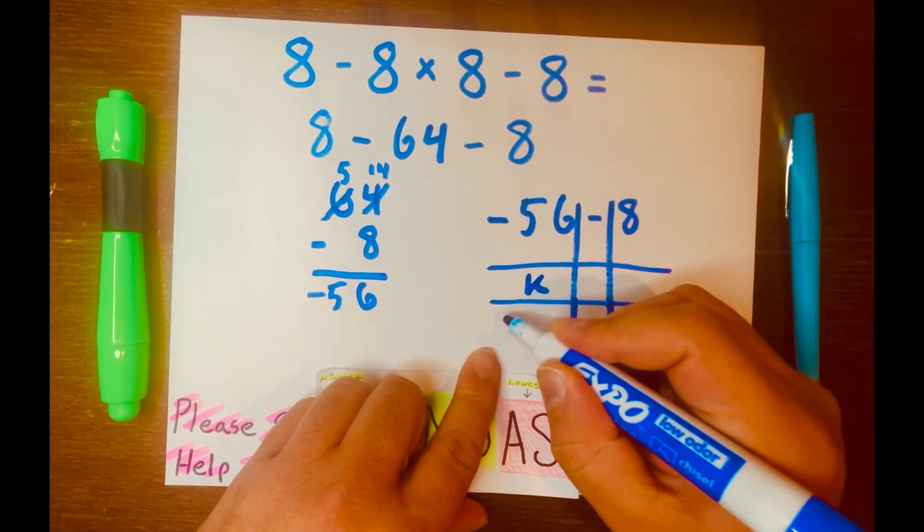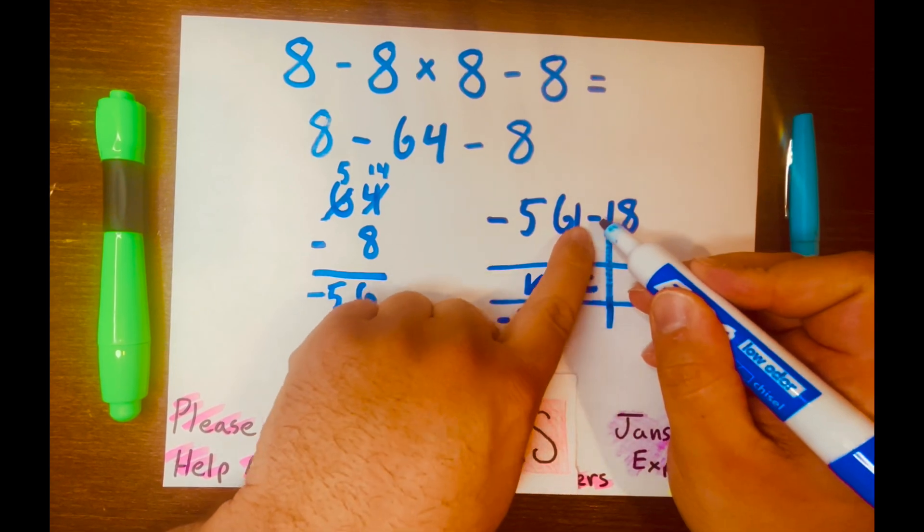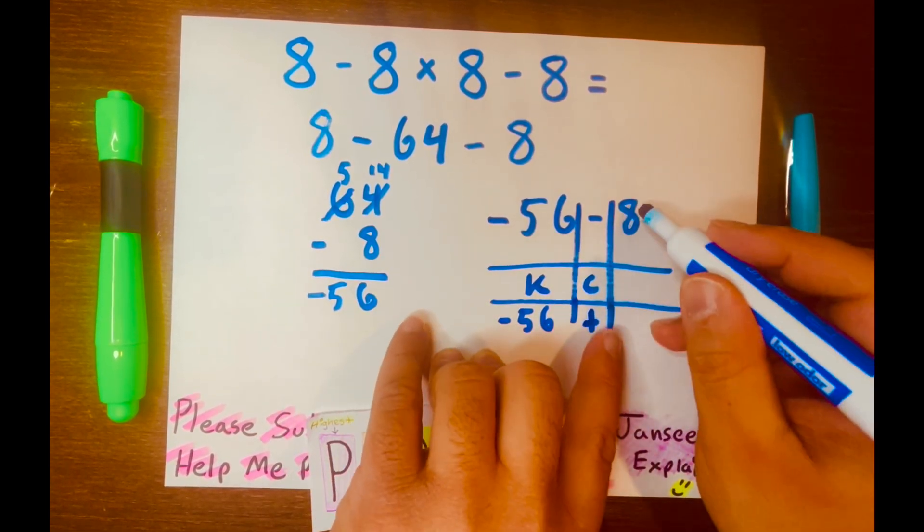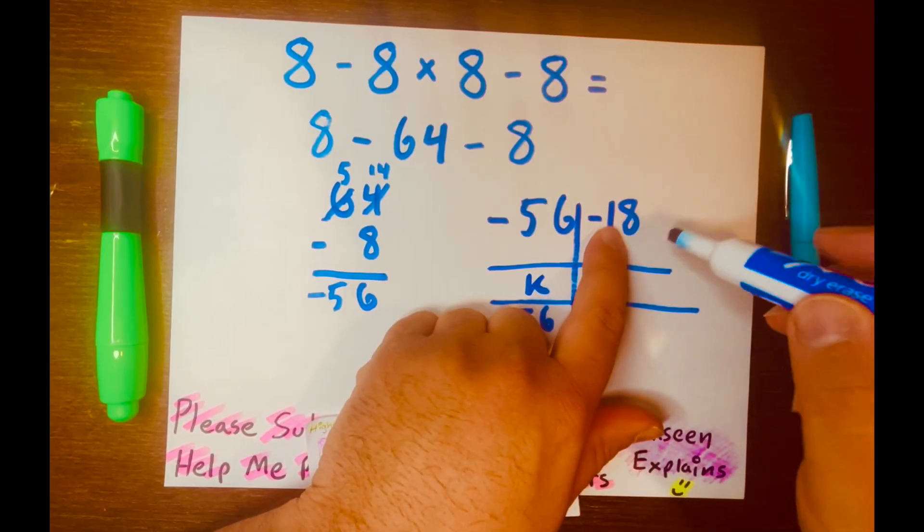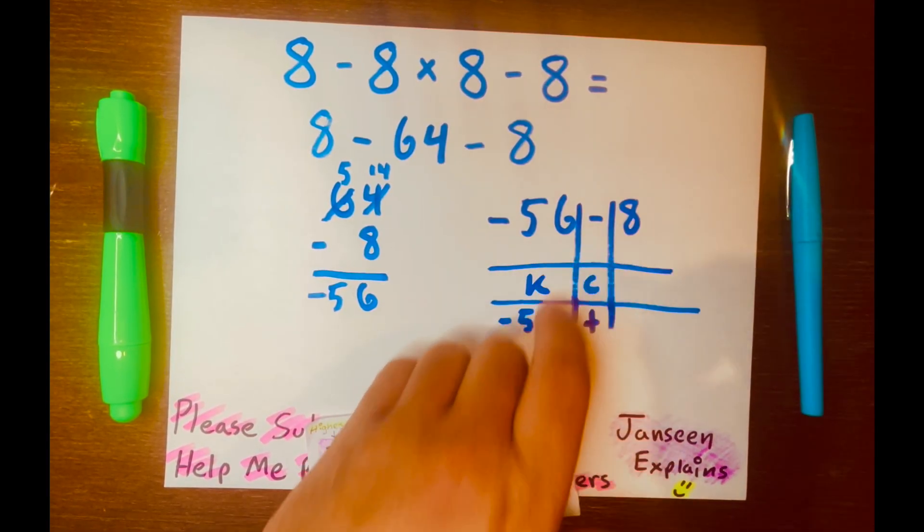So we'll keep the first part, negative 56. Change the subtraction to addition. And then lastly, we'll not just flip, but write the opposite of 8. So it'll be negative 8.